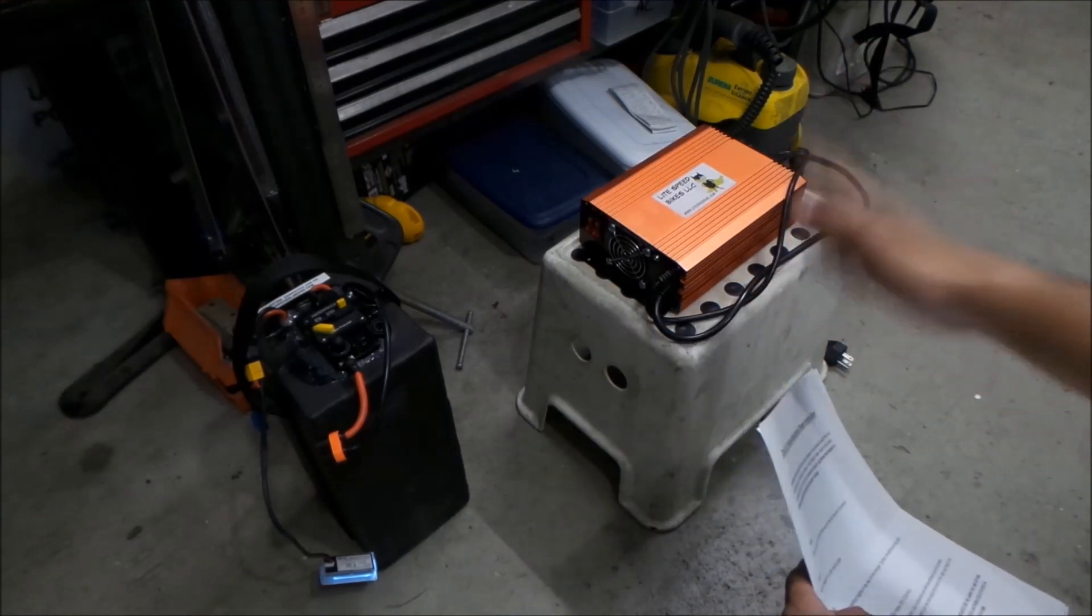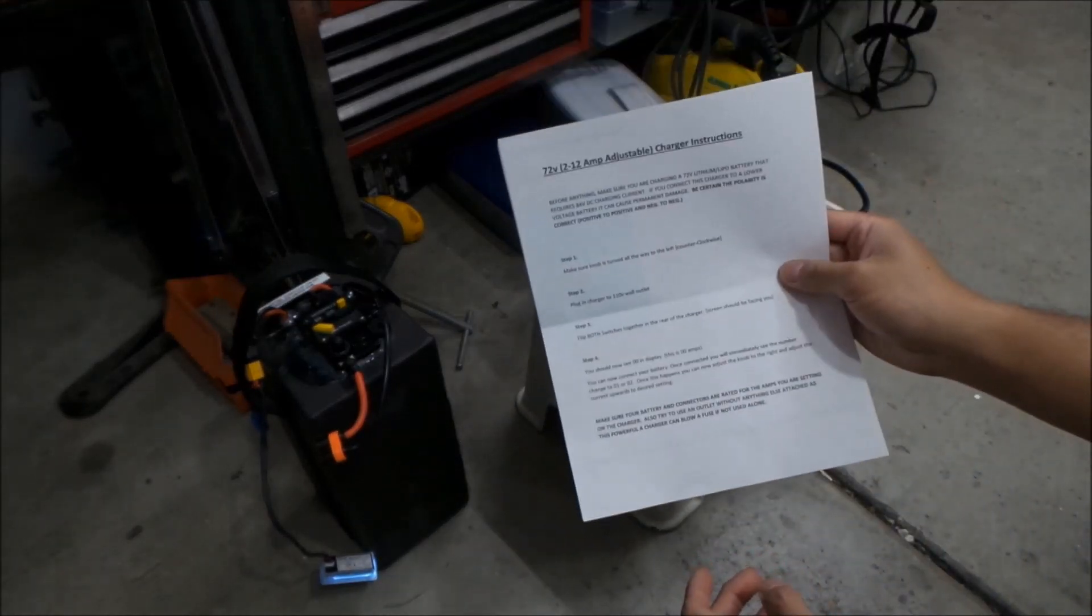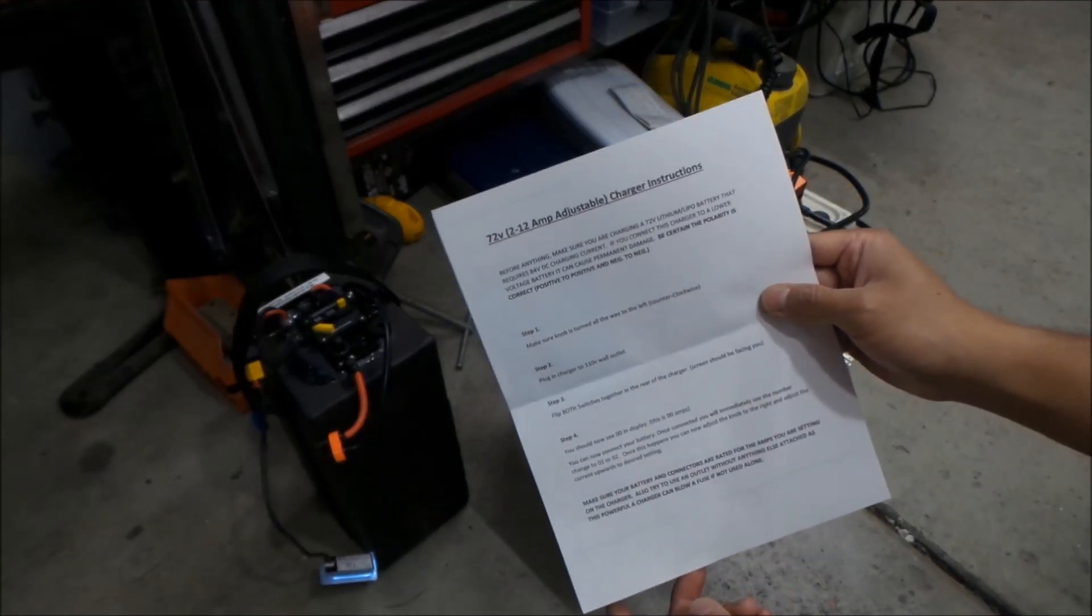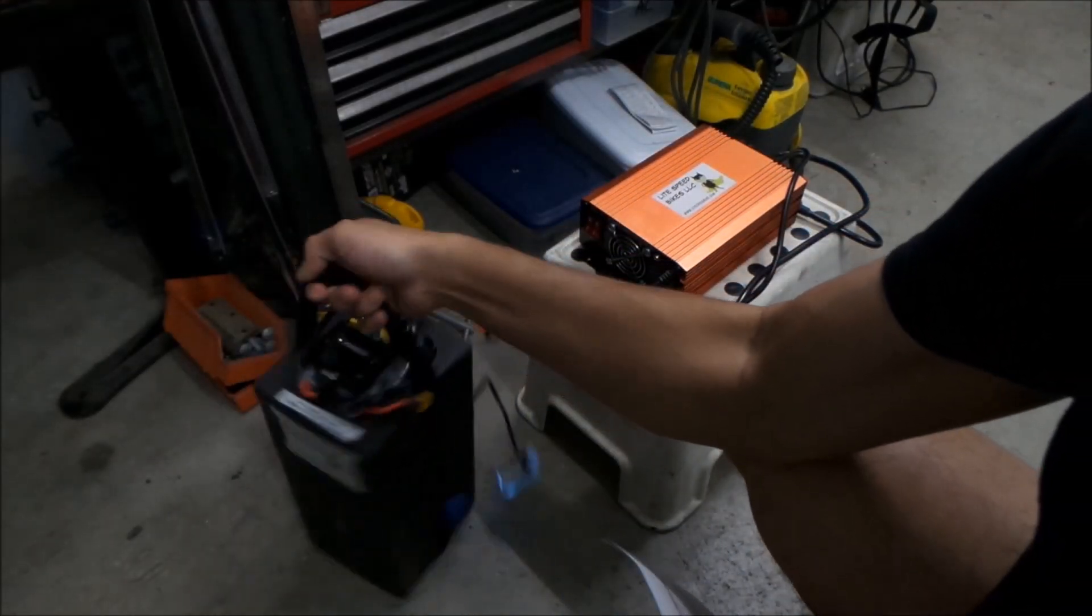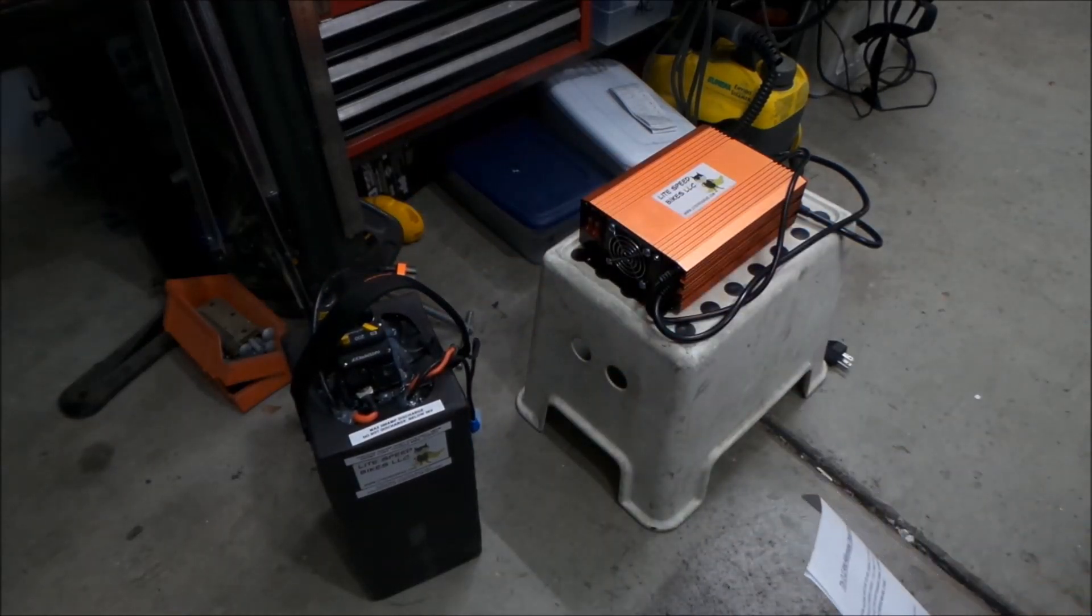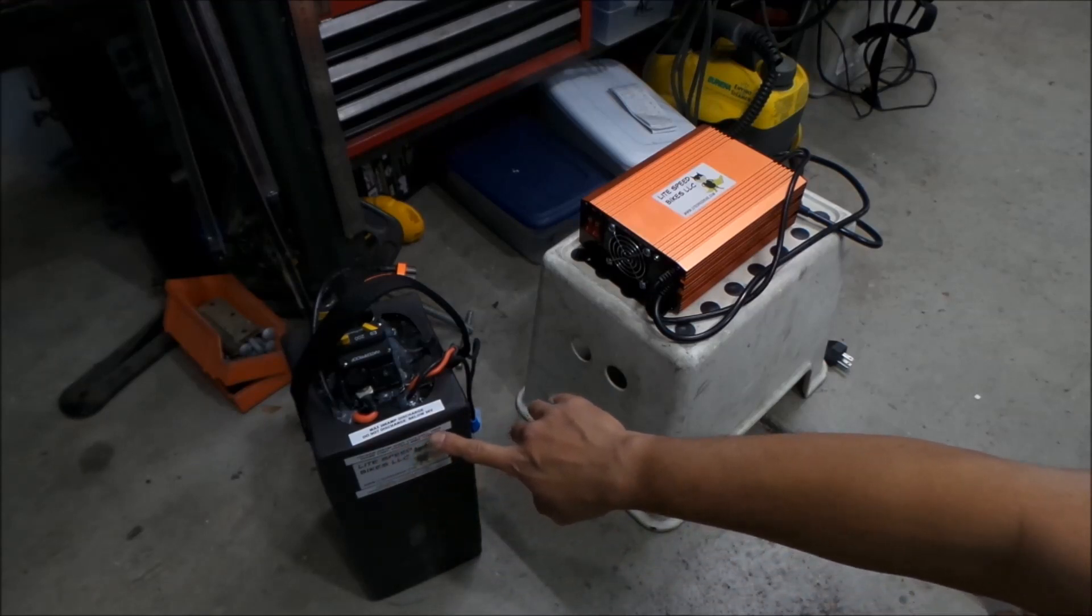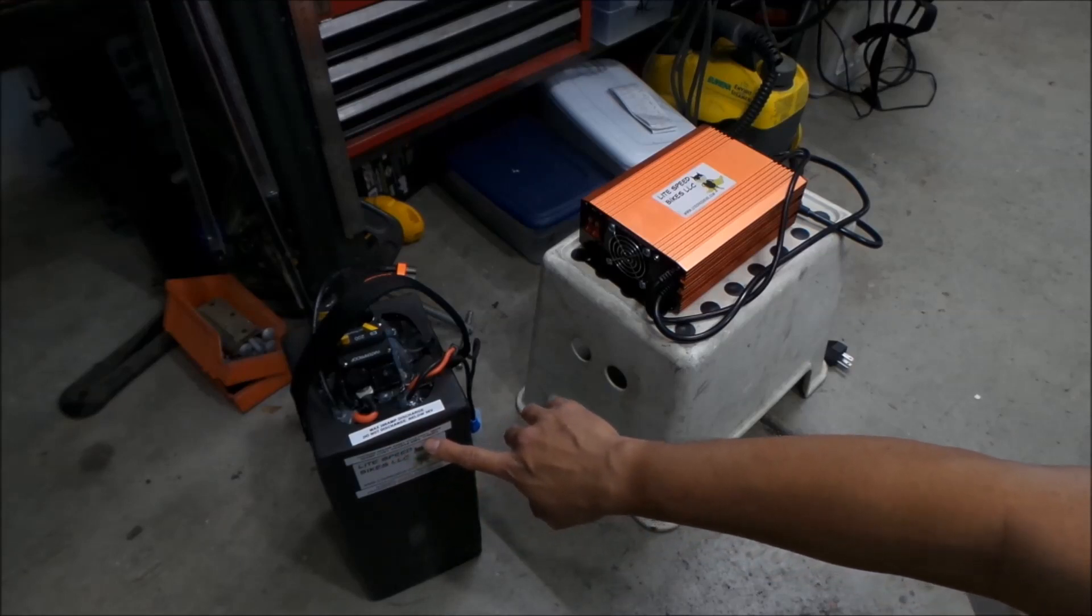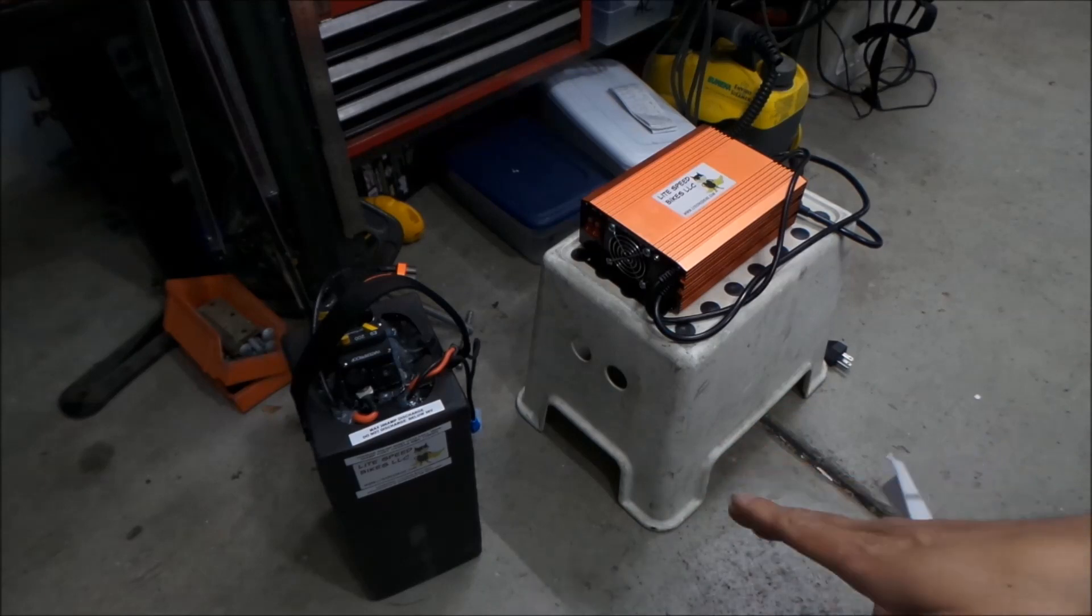So this is what battery we'll be charging today. This is the 72 volts, 30 amp hour, 20S, 10P, Sony VTC 6L, 18650, 50 amp continuous charge BMS, 2160 watt hours. That's our full stats right there.